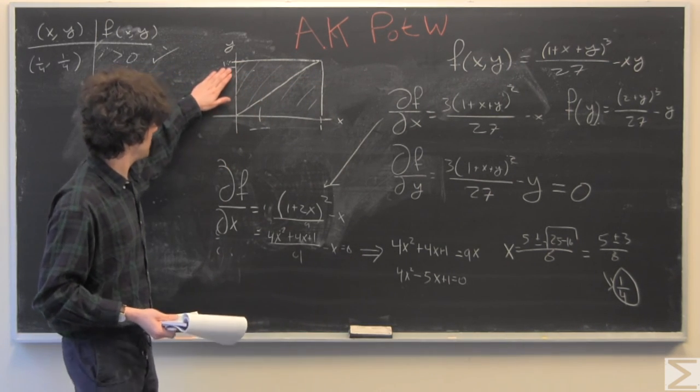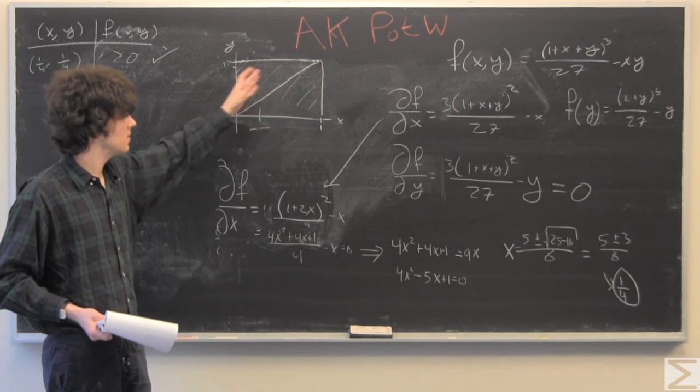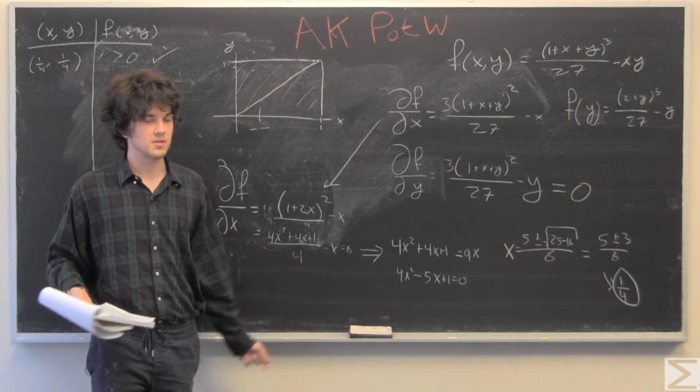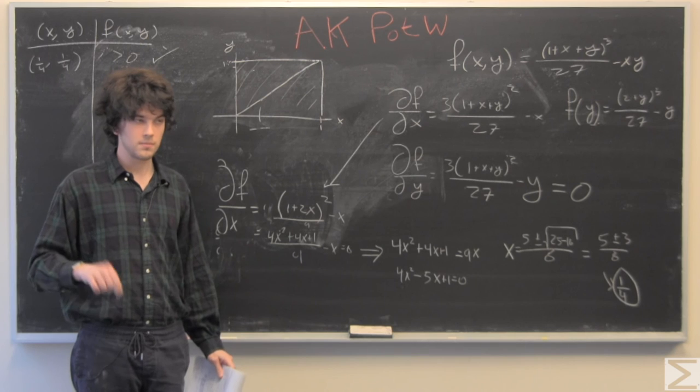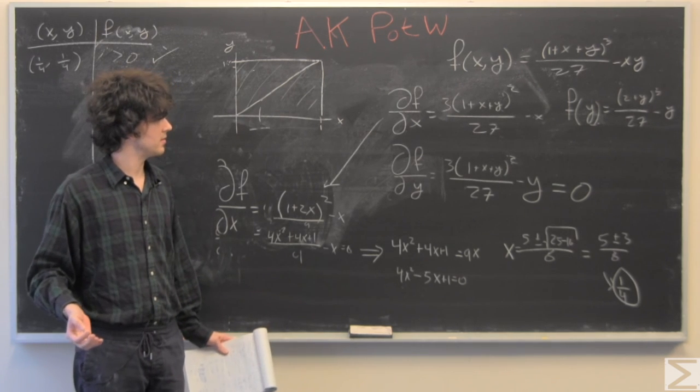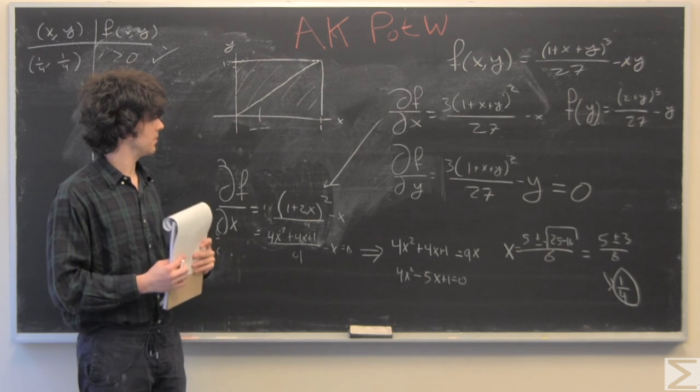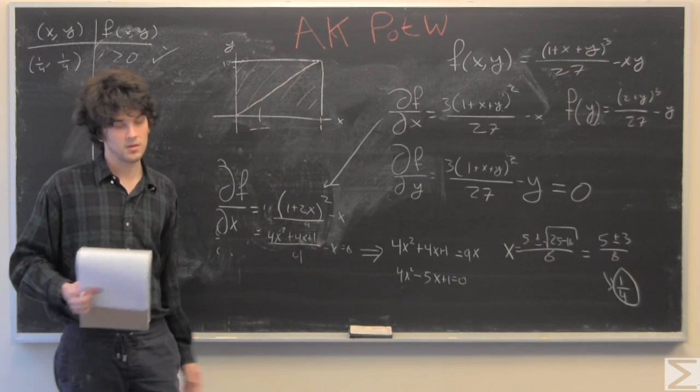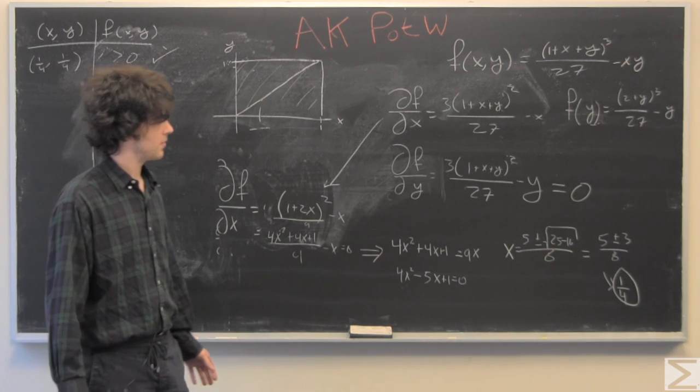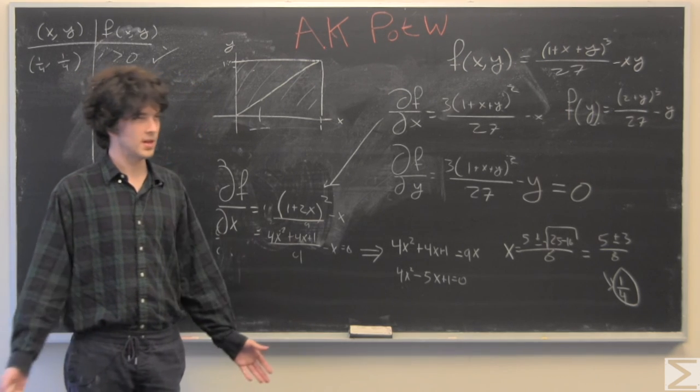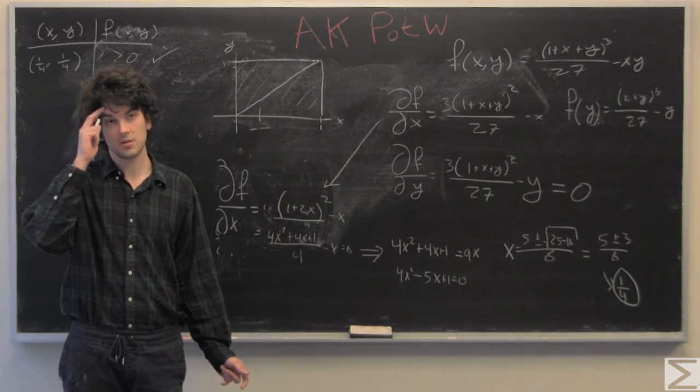We've shown that our function f of x, y is greater than 0 because it is greater than 0 at all of our critical points, which means that it's greater than 0 for all the points in this domain here. And if you recall, we were looking for f of x greater than 0 because that would tell us that the arithmetic mean is greater than or equal to the geometric mean.